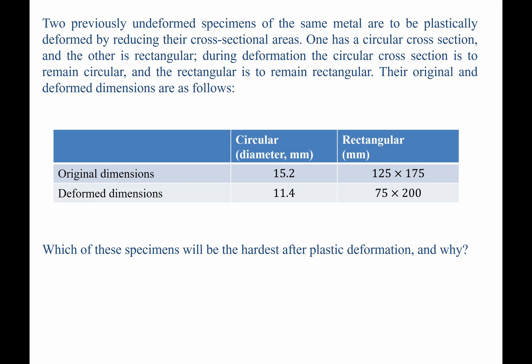This question gives us two samples which begin in an undeformed state. One has a circular cross-section, while the other has a rectangular cross-section. We are given the original dimensions, and then we are told that these samples are deformed, and we are given the deformed dimensions as well.